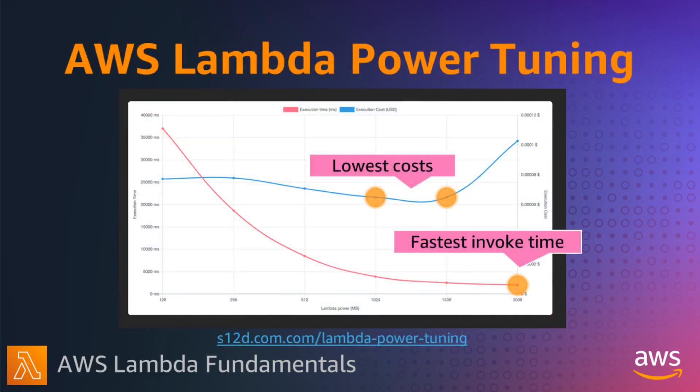Working out all the optimal memory configurations can be a very manual process if you try all the possible configurations yourself. Lambda Power Tuning is an open-source tool to find the best configuration for a function. It gives you a data-driven approach to help you visualize and fine-tune the memory and power configurations to optimize your Lambda functions. The tool runs in your own AWS account, powered by AWS Step Functions, and supports three optimization strategies: cost, speed, and balanced. It's language-agnostic, so you can optimize any Lambda function in any of your languages.